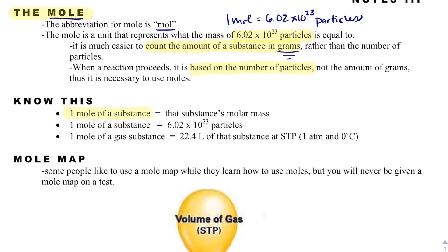One mole of substance will be equal to that substance's molar mass — we covered that in notes 8.1. One mole of a substance is equal to 6.02 times 10 to the 23rd particles. One mole of a gas substance is going to be equal to 22.4 liters of that substance at STP, which stands for Standard Temperature and Pressure. When we do a whole unit on gases, STP will be important, but for right now we can sort of set it aside.